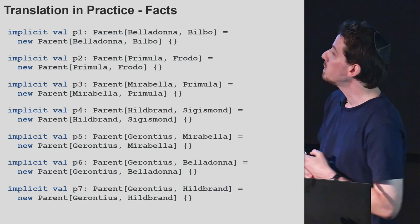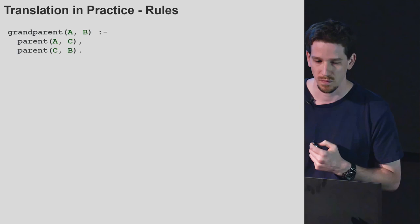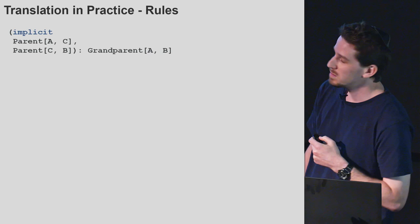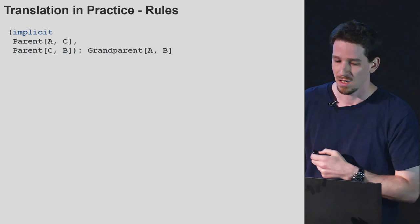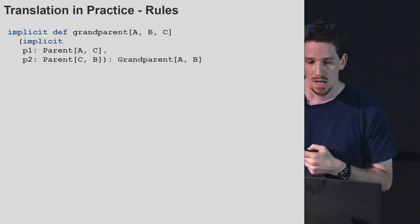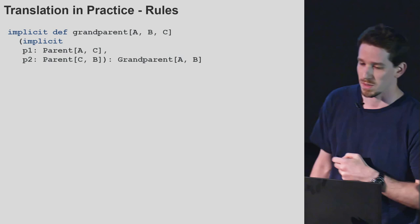Now let's try to convert a rule into our Scala Prolog setup. We start with the Prolog definition, do capitalization and brackets, then reverse the if operator and rename it to implicit. This almost looks like valid Scala — we just need to add the noise that makes it a legal Scala definition. The names of the implicits don't really matter. We have to declare all our variables up front because Scala is statically typed. If you kind of squint hard enough, it resembles the Prolog definition — we just have to read it backwards. A is the grandparent of B if this holds.